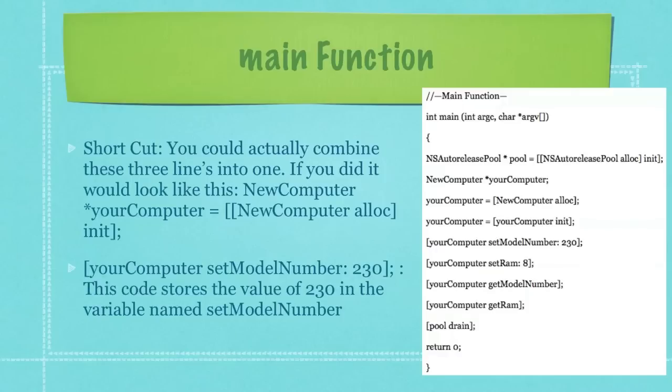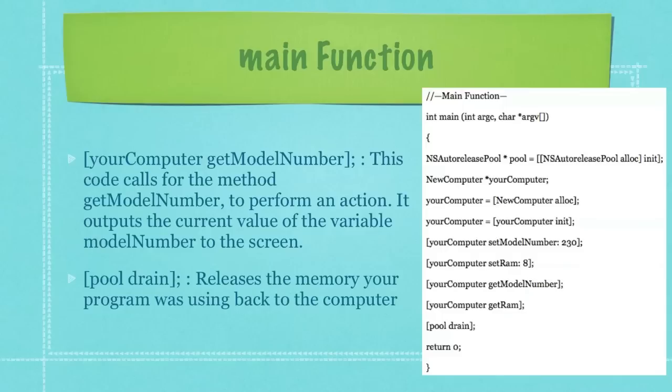Back over to the right, on the next line, this code stores the value of 230 in the variable named setModelNumber. And then the next line of code calls for the method getModelNumber to perform an action. And that action would be the outputting of the current value of the variable modelNumber to the screen.